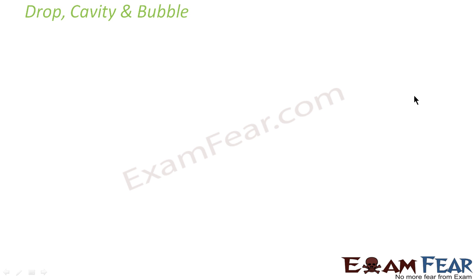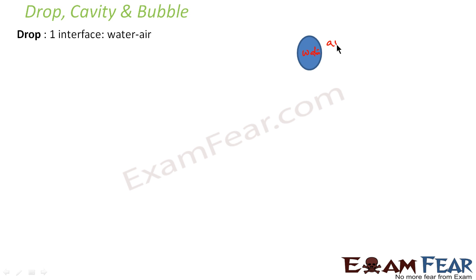Now let us look at the distinction between a drop, a cavity, and a bubble. A drop is a spherical structure which is filled with water — there is water inside the drop and it has only one interface which separates it from air, that is air outside and water inside. So a drop has only one interface: the water-air interface.